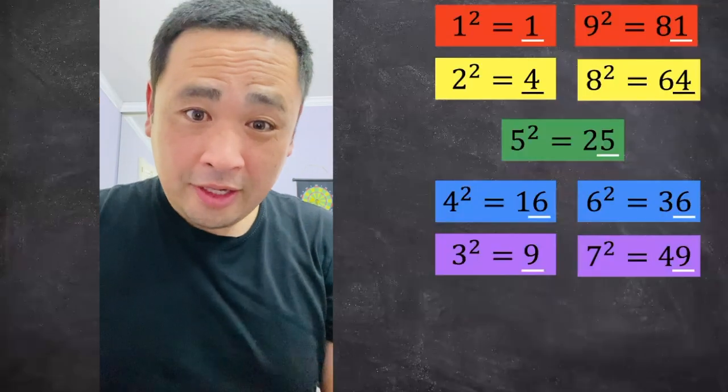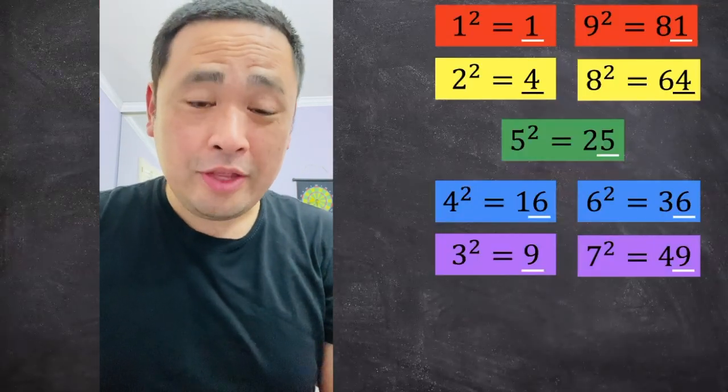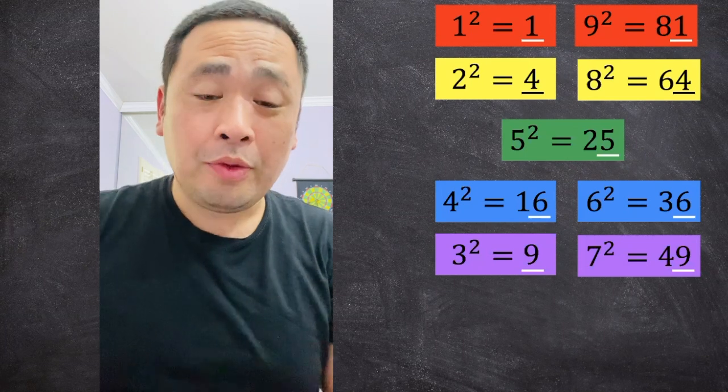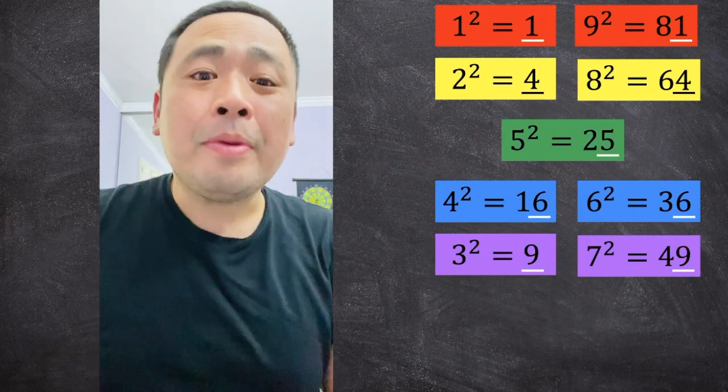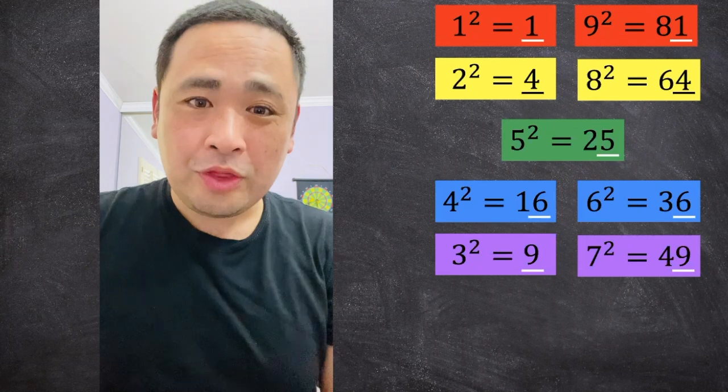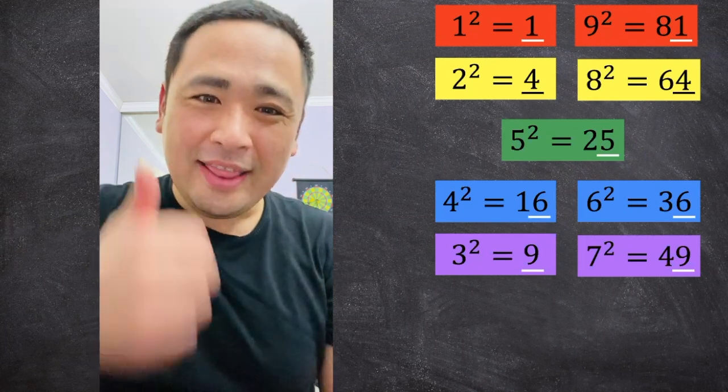Hey guys, this trick is literally one of the coolest things in math, and you can take any square root in only 3 seconds in your brain, but you have to know your squares from 1 through 9. So once you get that, let's get started.